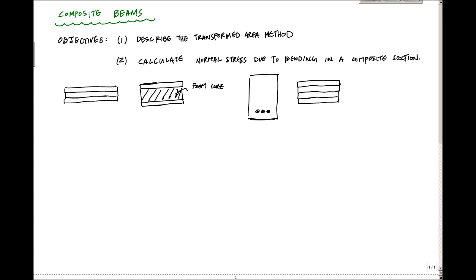It doesn't matter what the material is. What is different though in each layer is that the modulus of elasticity changes between materials. They're of different moduli. What we want to do in this video is talk about how to analyze them so that we can calculate stresses due to bending. One of the ways to do that is this thing called the transformed area method.